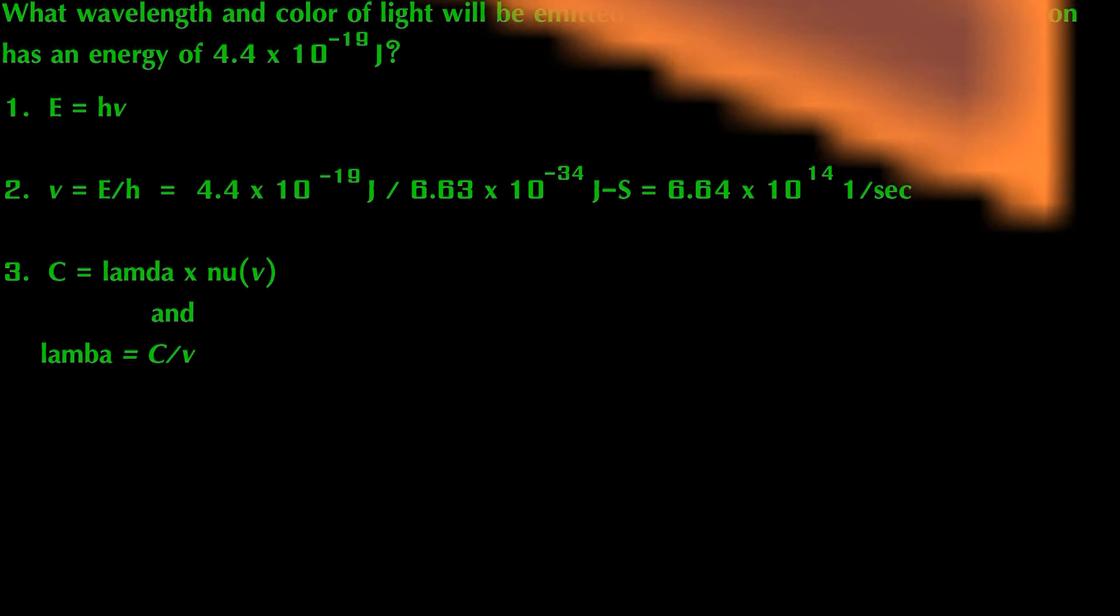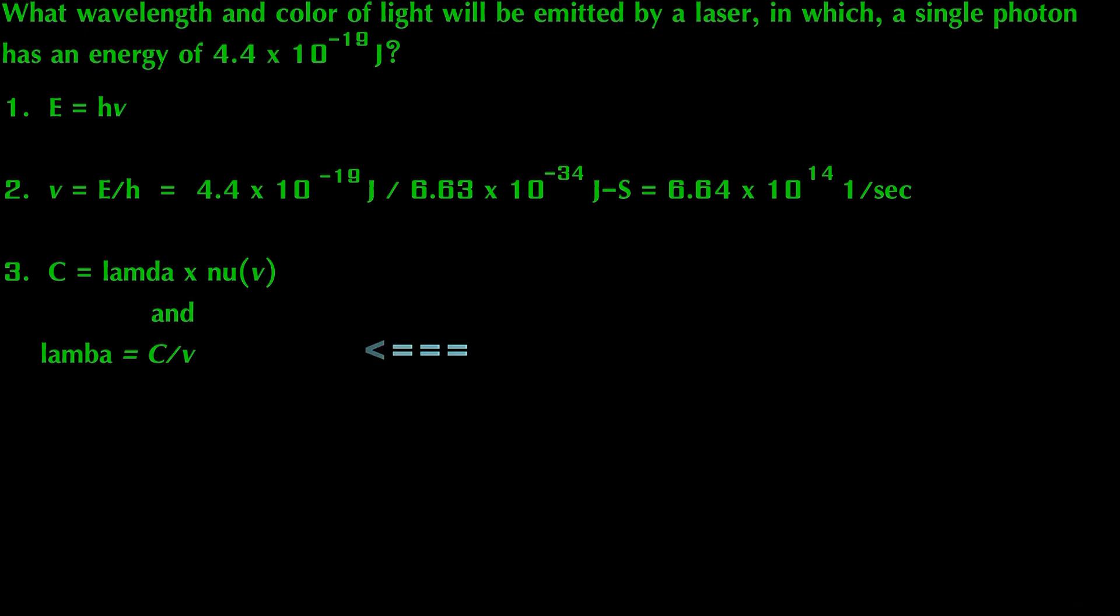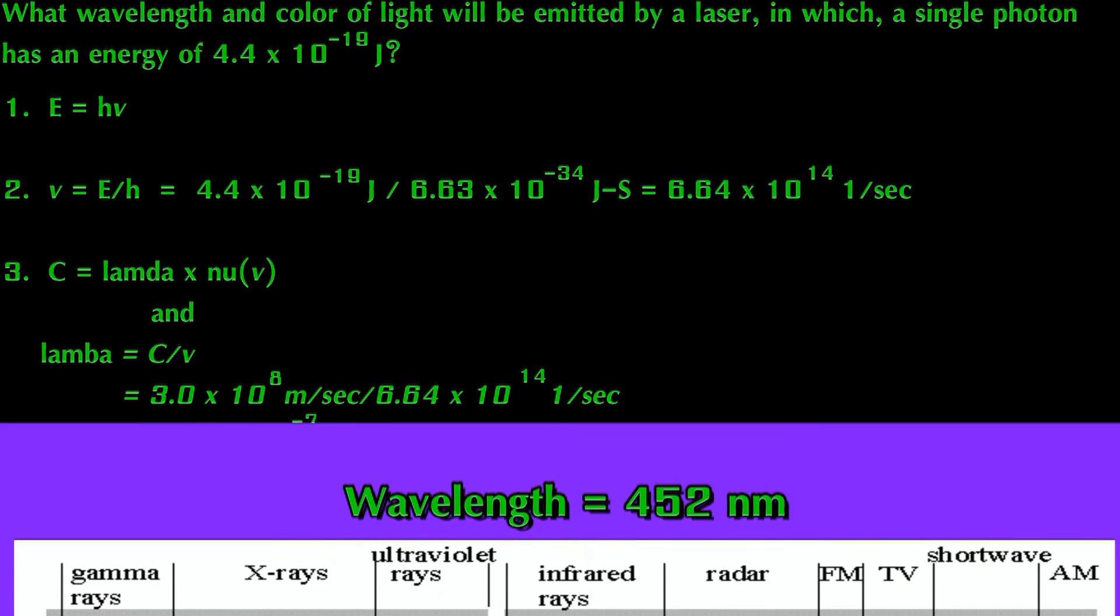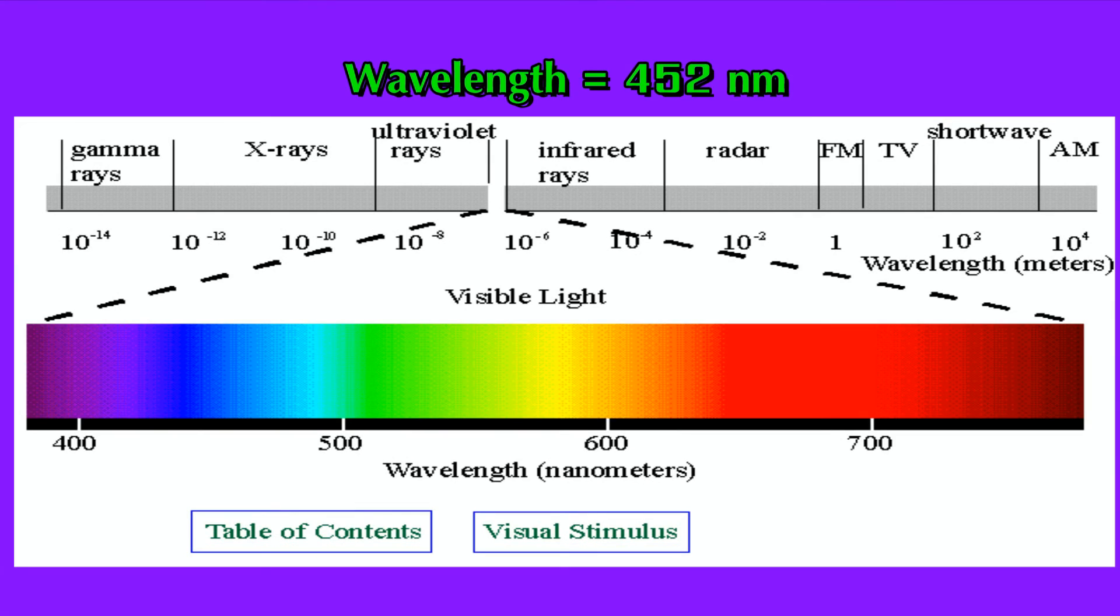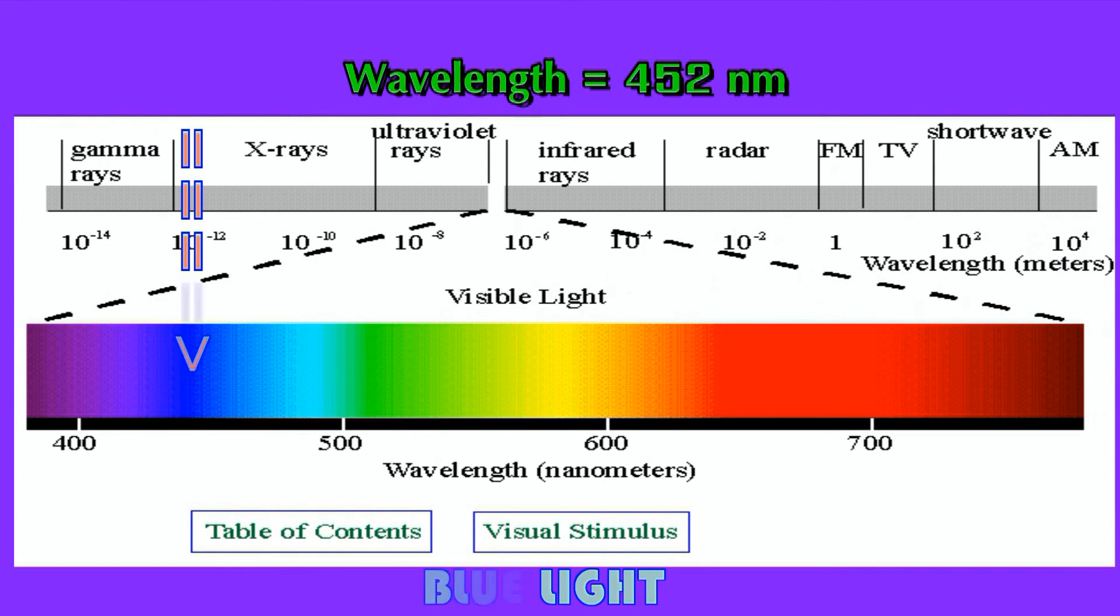Now we turn to the speed of light equation where the speed of light is equal to lambda nu. Solving for lambda, lambda is equal to the speed of light c divided by nu. This will give a wavelength of 4.52 times 10 to the minus 7 meters. And of course 4.52 times 10 to the minus 7 meters is equal to 452 nanometers. This photon will fall in the blue range on the visible spectrum.